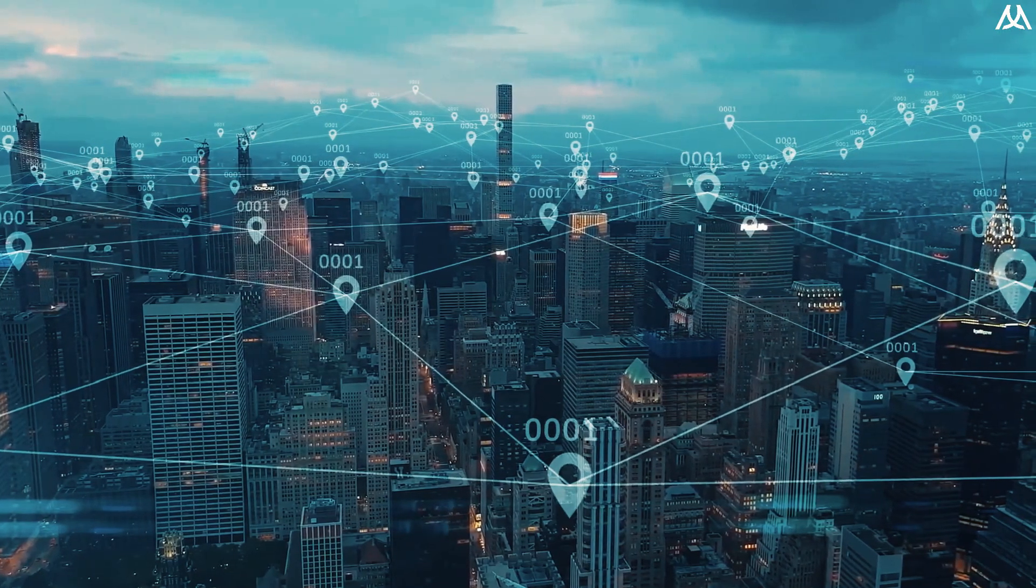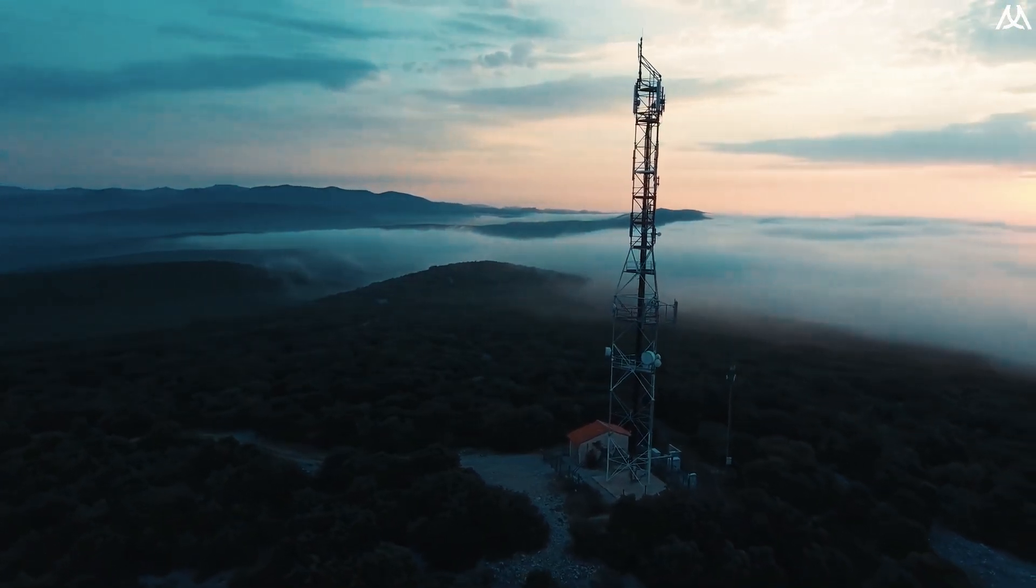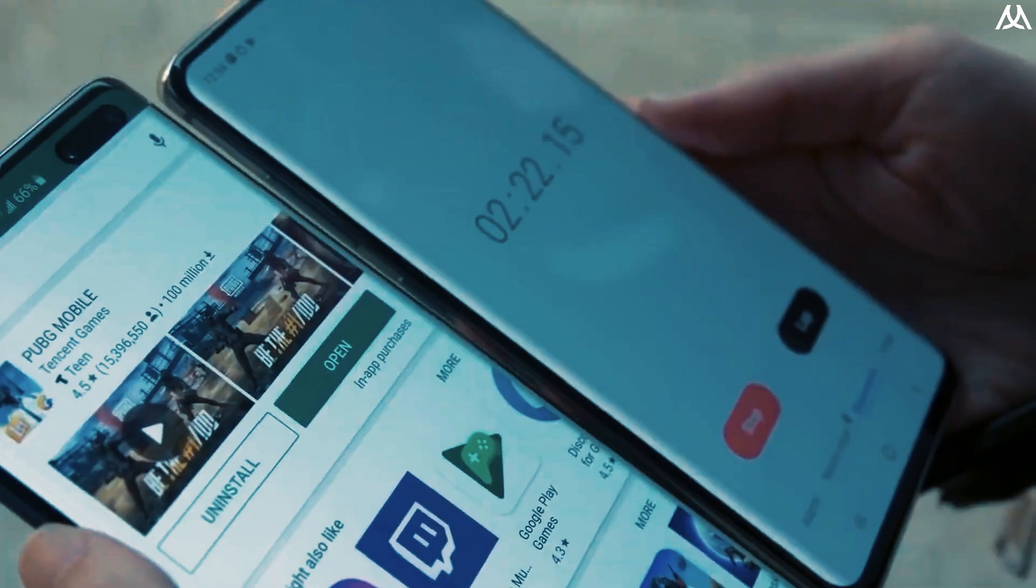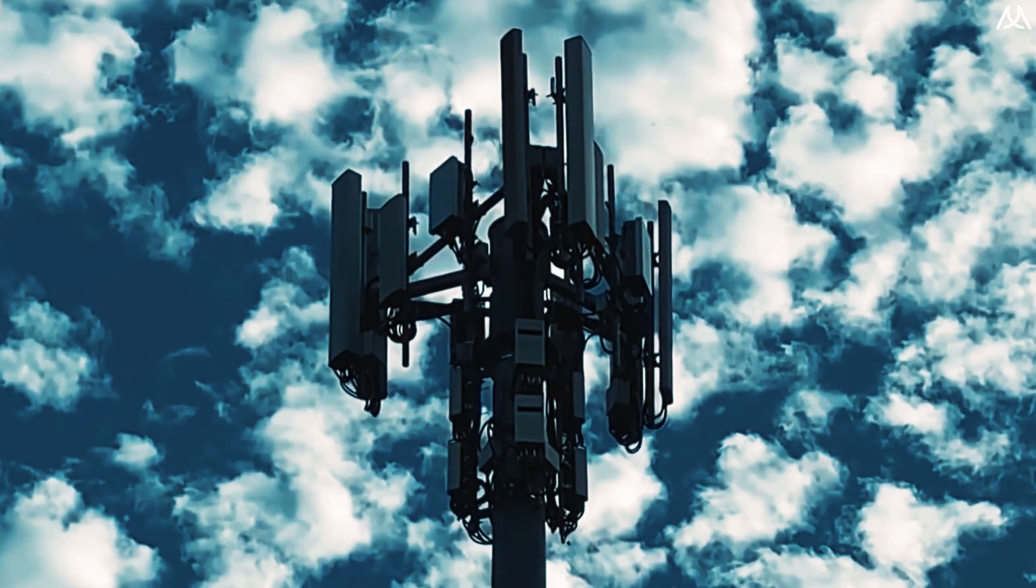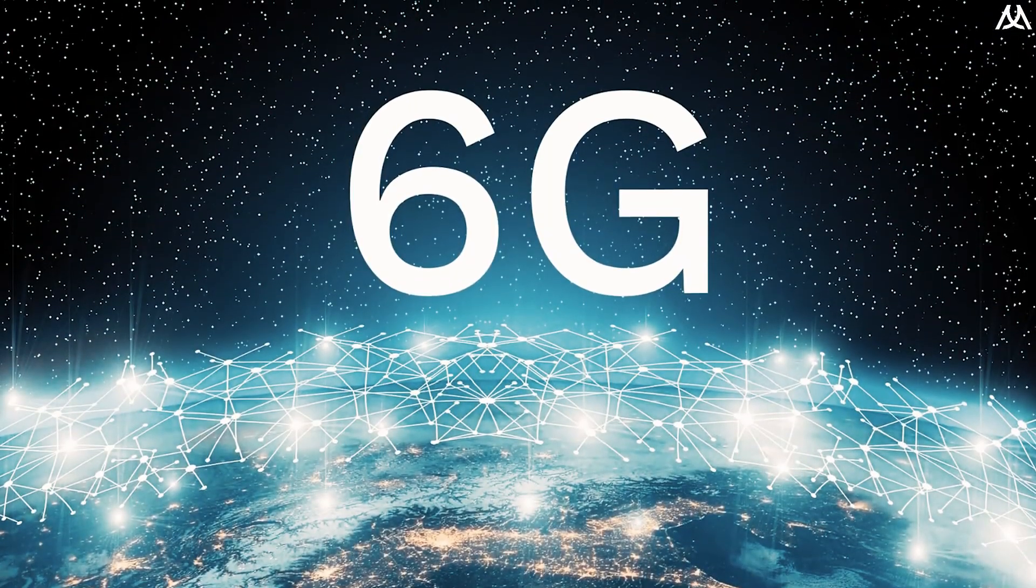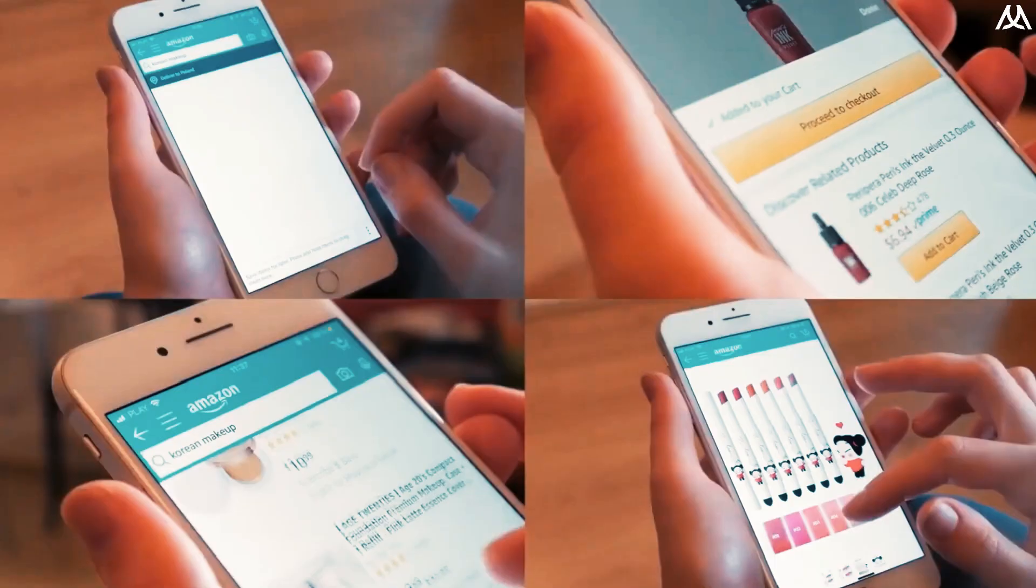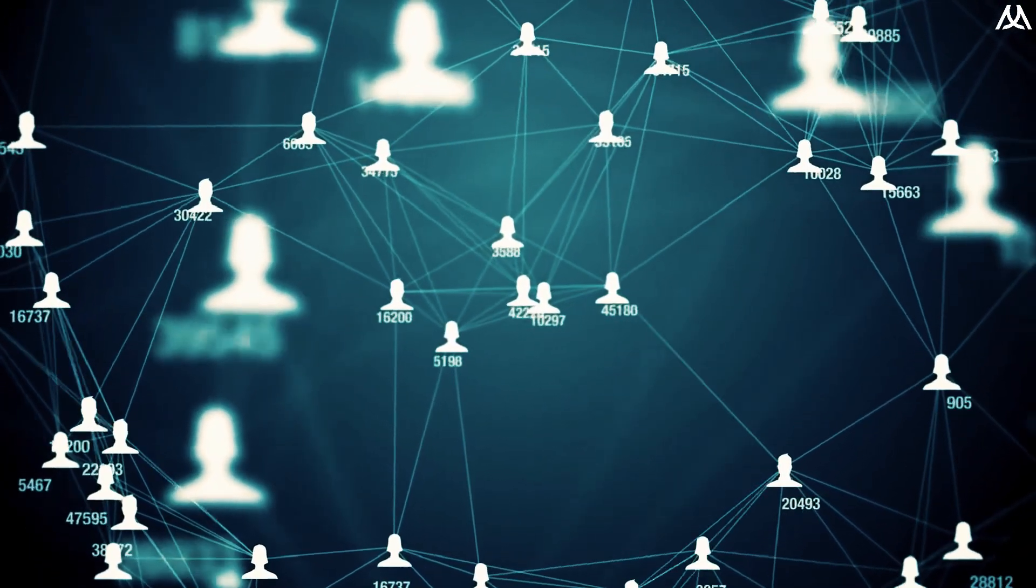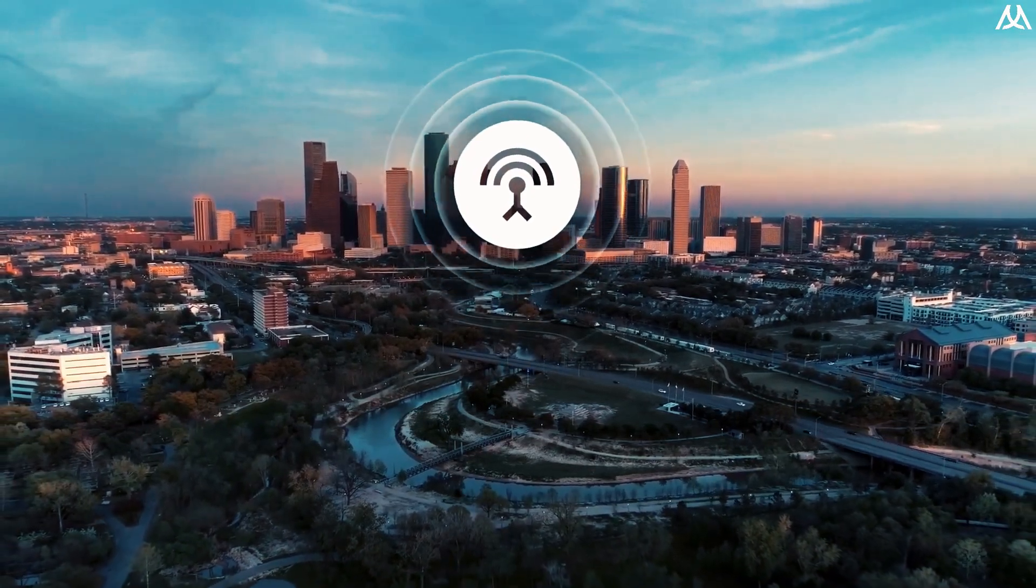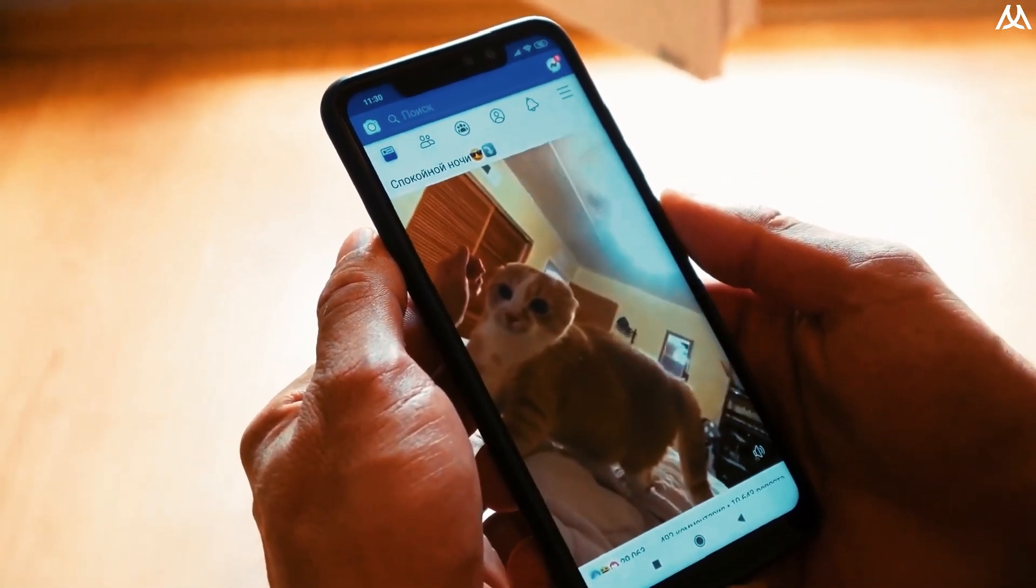By 2030, the widespread adoption of 6G technology could supersede 5G, offering speeds estimated to be 100 times faster, reaching up to 1 terabyte per second. At such incredible speeds, the download of 142 hours of Netflix content could be accomplished in just one second. 6G technology would also enable cyberspace to support real-time human thought and action through immersive virtual reality experiences and brain-computer interface devices integrated into the human body. This advancement would result in virtual reality simulations that closely resemble real-life experiences.